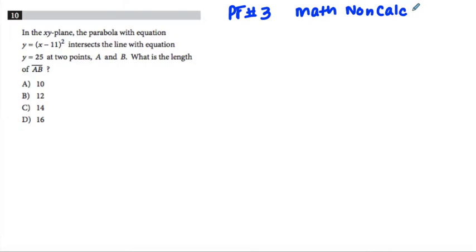Okay, there's a lot of systems of equations on the SAT, and so we've got to feel comfortable with what they're asking us to do and then answering the question that they actually ask. So it says in the xy-plane, so just in the coordinate plane, the parabola with equation y equals x minus 11 quantity squared intersects the line with equation y equals 25.